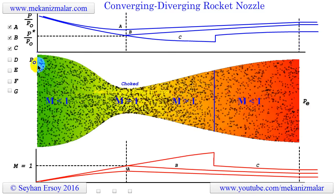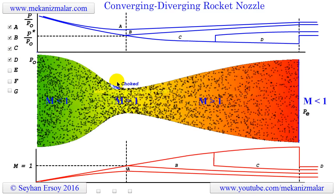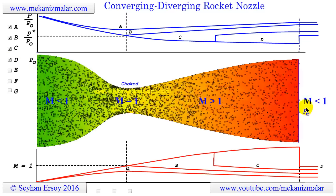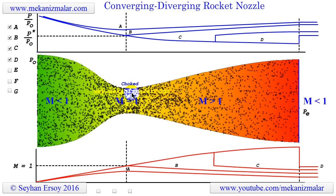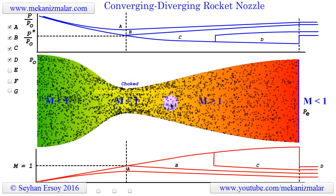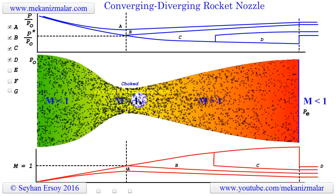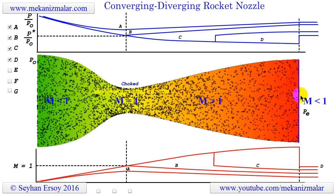So let's see what happens when we reduce the exit pressure even further. If we reduce the exit pressure further, we will observe that the supersonic region starting from the throat will begin to widen toward the exit. Also, the formation of the shock wave will move toward the exit nozzle.